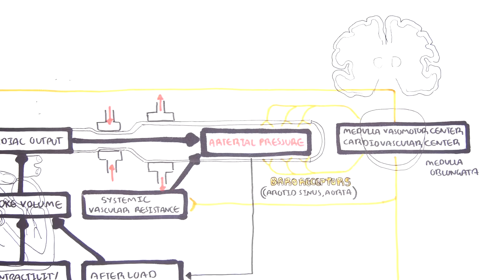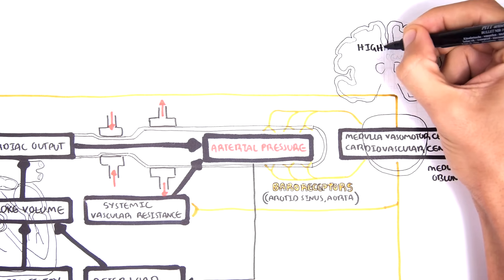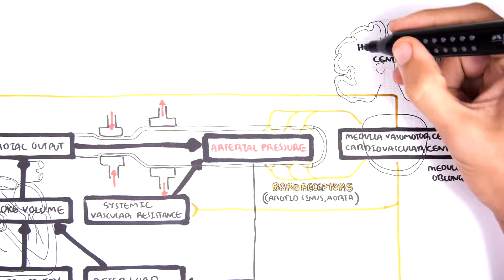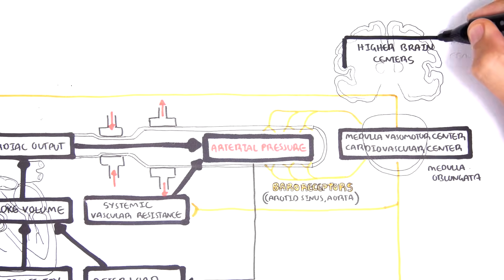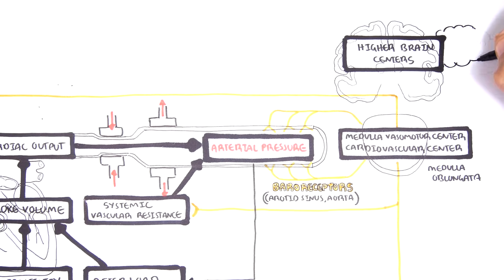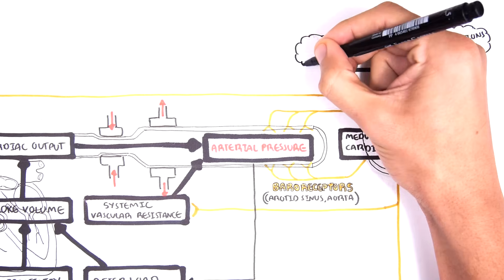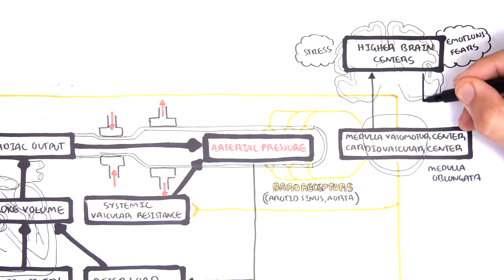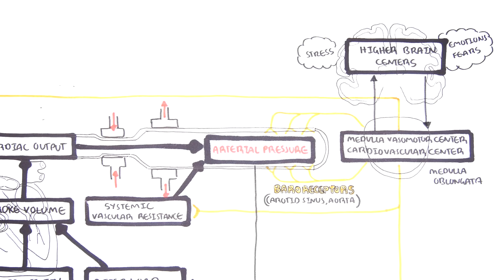It's also important to know that your higher brain centers communicate with the medulla vasomotor center and the cardiovascular center. For example, in a state of emotion — fear, stress, worry — the higher brain centers will communicate to the medulla oblongata, telling it to increase your heart rate.